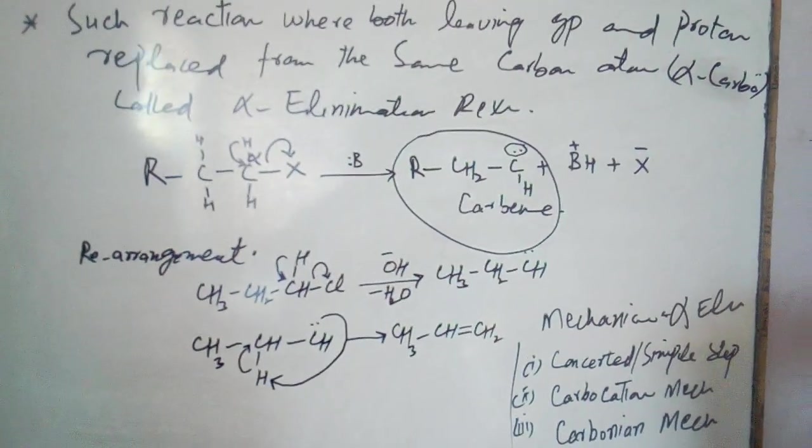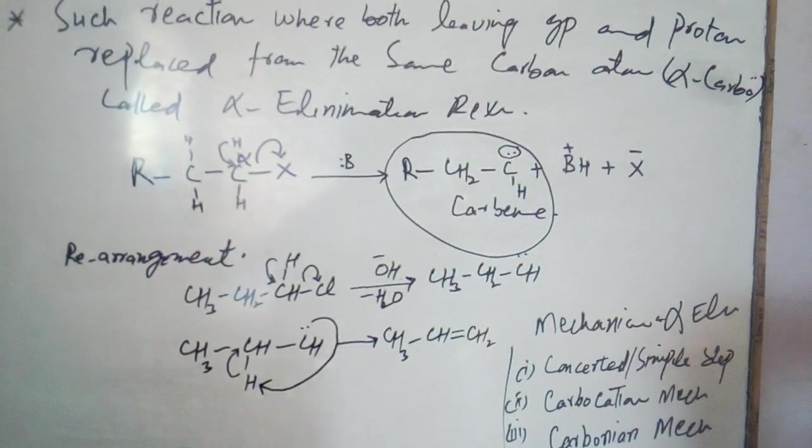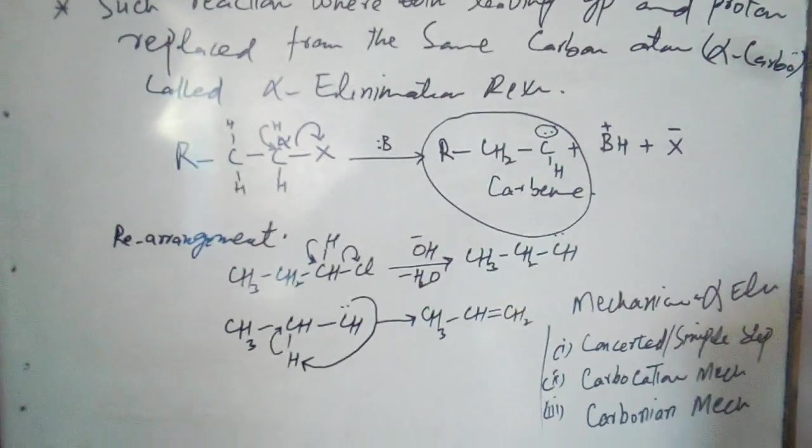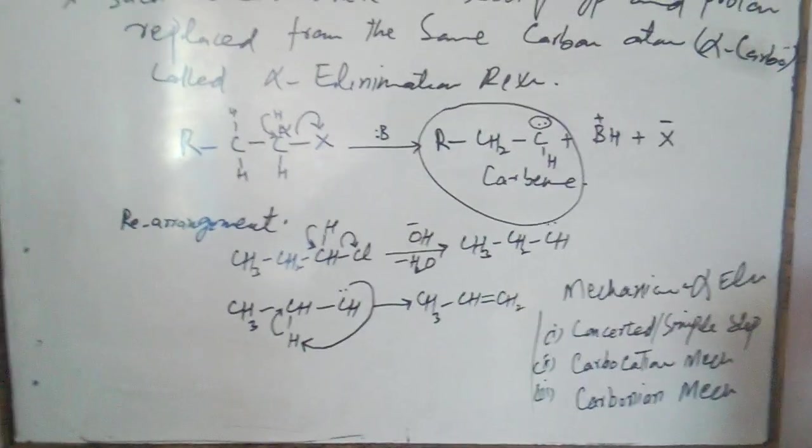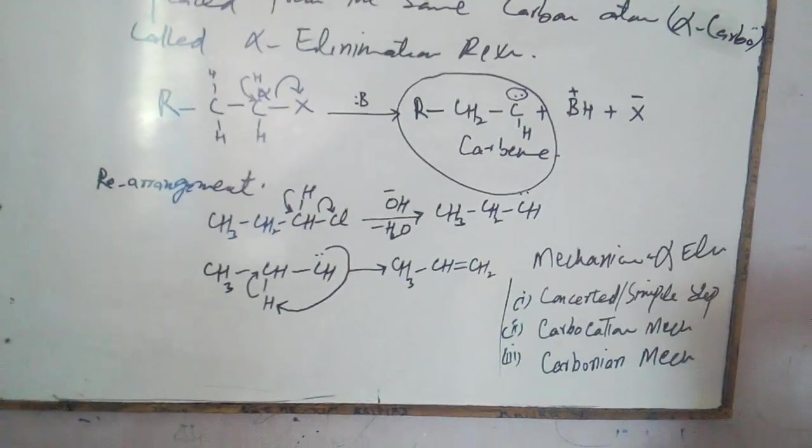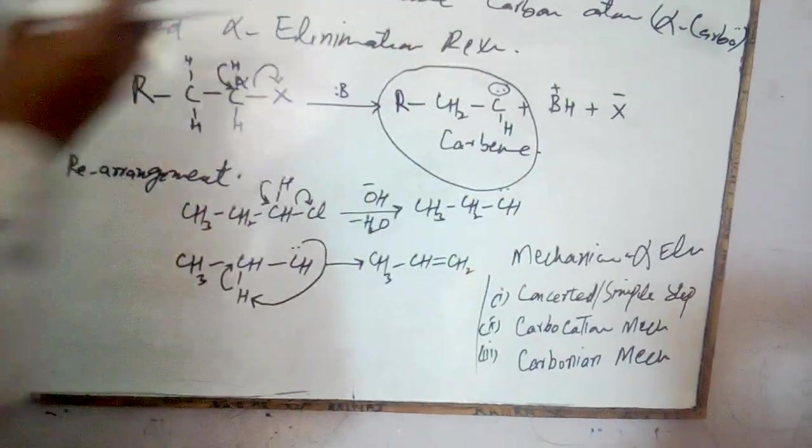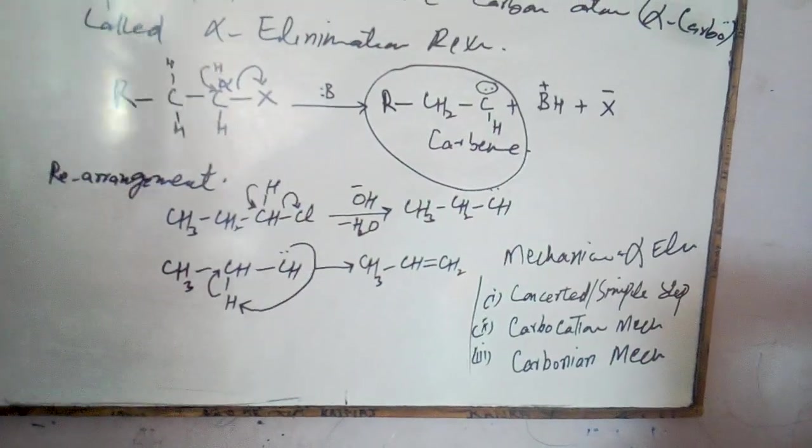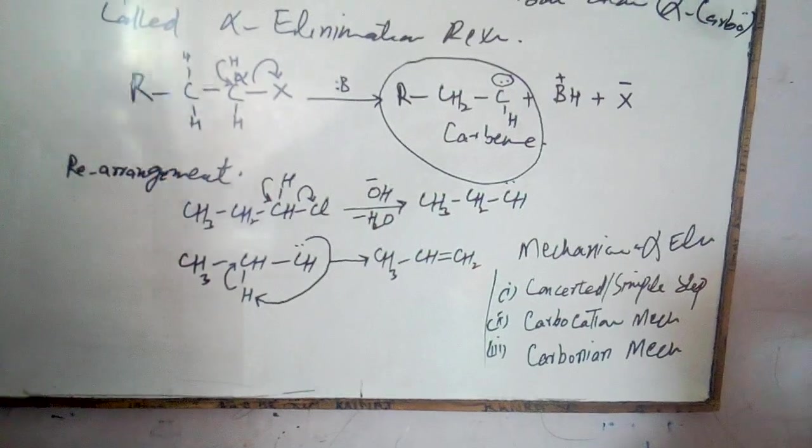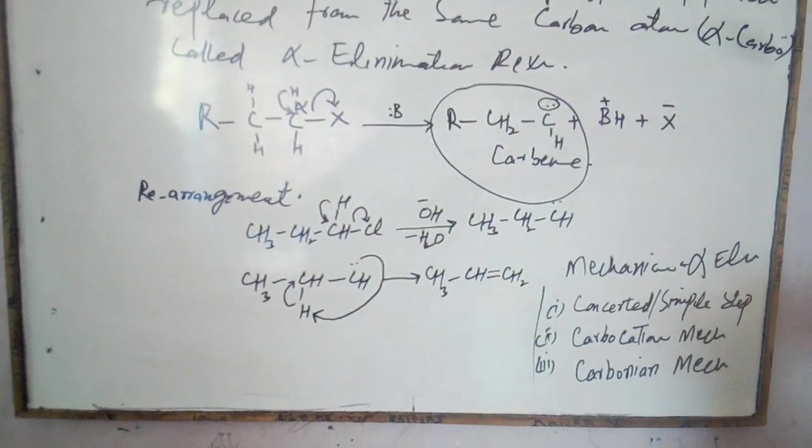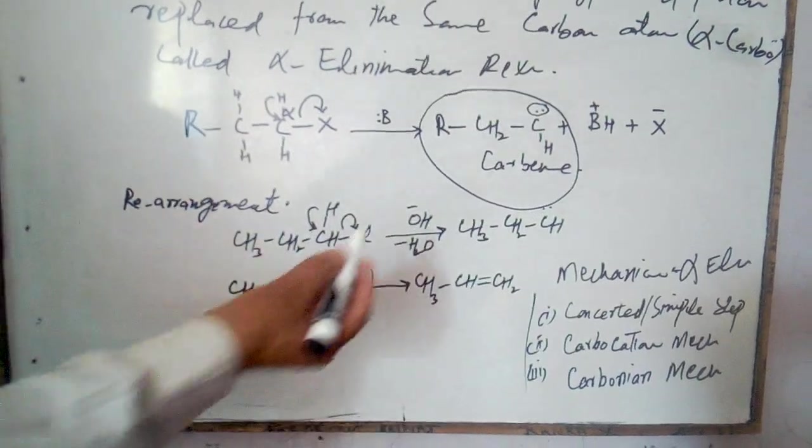Keep in mind that in alpha elimination reactions, we don't initially produce a double bond as the elimination product. Instead, a carbene is obtained. Since the carbene is very reactive, rearrangement may occur, and as a result of rearrangement, a double bond may appear in some cases.